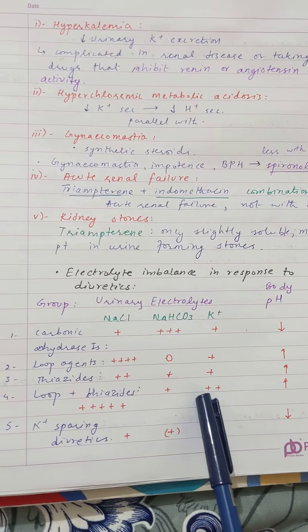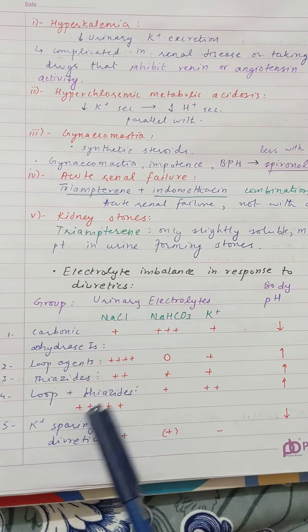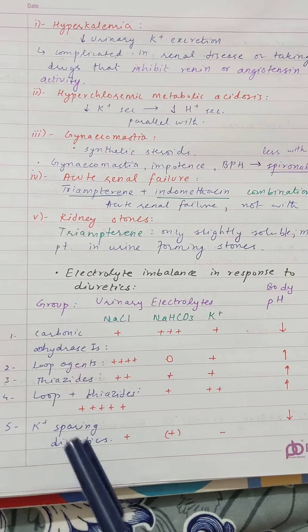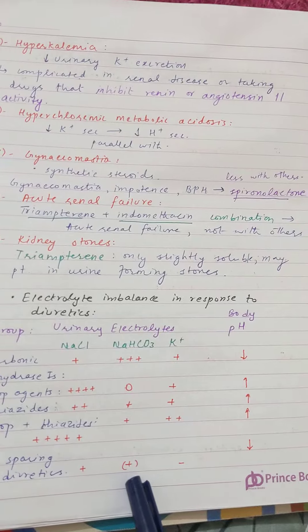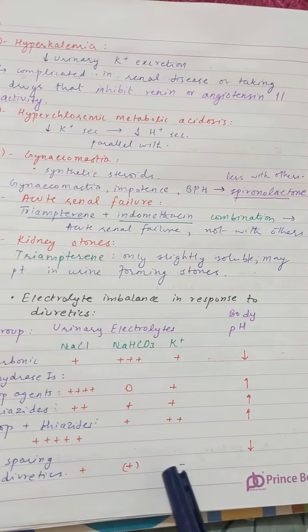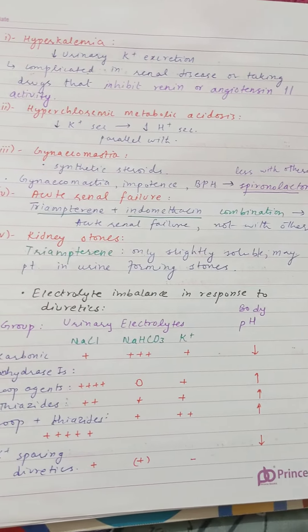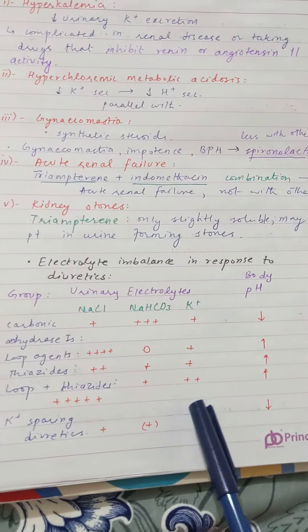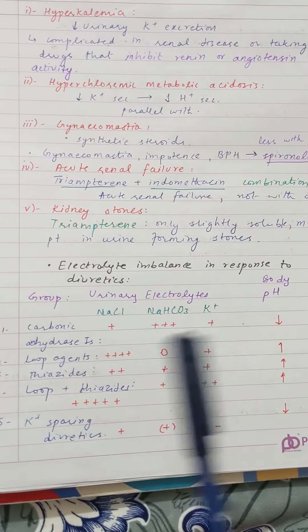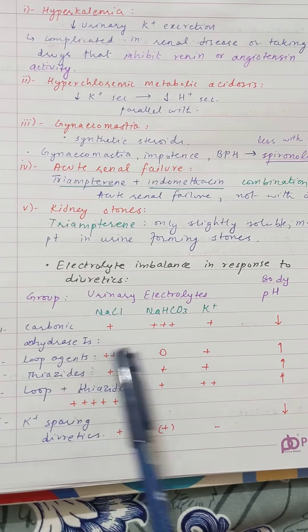In potassium-sparing diuretics, NaCl urinary excretion would also occur, along with bicarbonate excretion. However, potassium excretion will not be present in urine — that is the key feature of potassium-sparing agents.